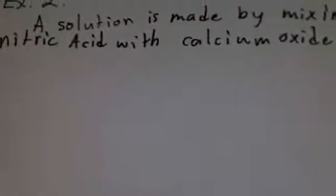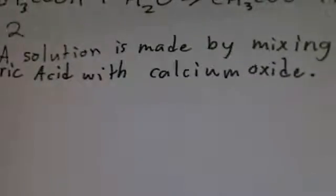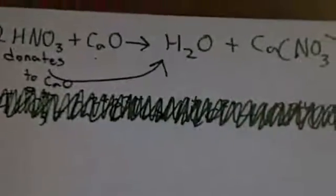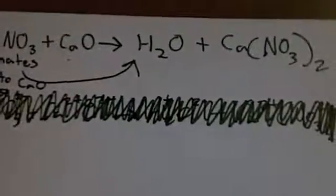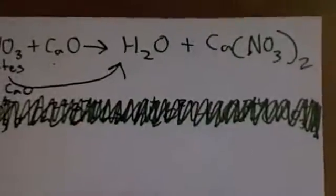Example 2. A solution is made by mixing nitric acid with calcium oxide. The nitric acid donates a hydrogen to the calcium oxide, splitting the calcium oxide into water and then calcium ions, which then form a calcium nitrate salt.